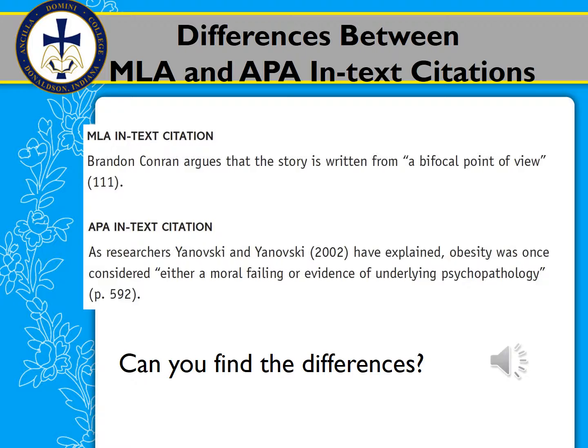With the APA in-text citation, the difference is that the year of research appears after the author's name. For example: "As researchers Yanofsky and Yanofsky (2002) have explained, obesity was once considered..." — the author introduces the researchers, does some paraphrasing, and then brings in an exact quote. After the quotation mark but before the period, we see the page number. In APA, they put "p." for page — in this case, p. 592. So those are some of the key differences.